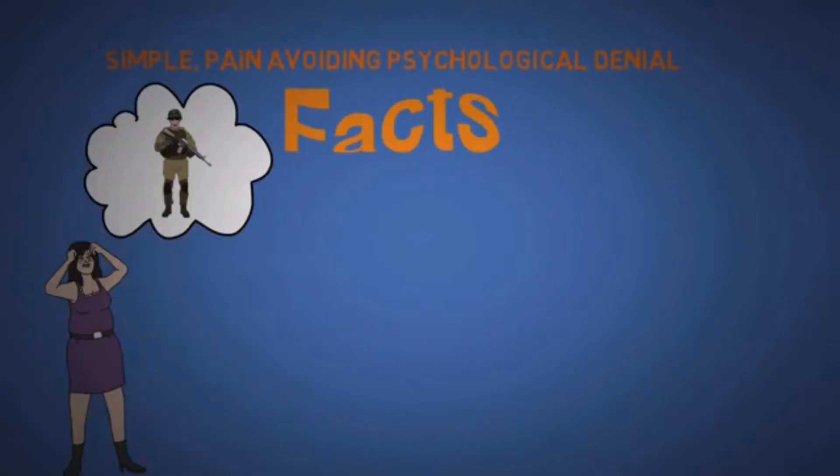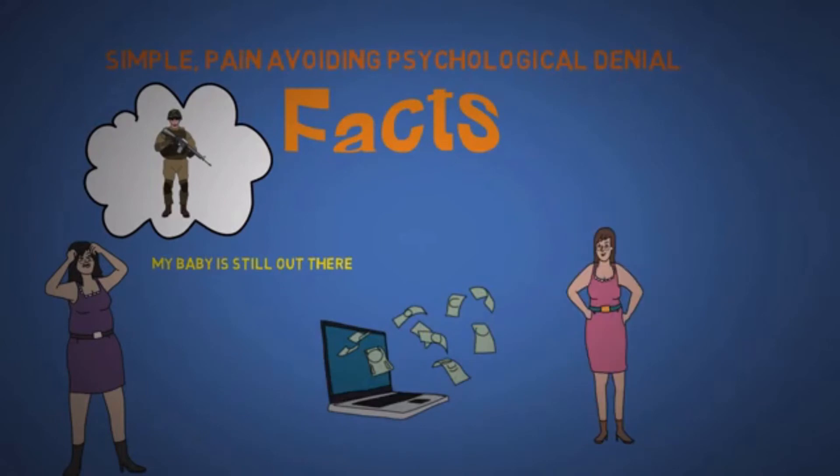The eleventh is simple pain-avoiding psychological denial. We have a habit of distorting the facts. There's stories of mothers who receive news that their son from the army died and refused to believe it. We can trick ourselves to numb the pain. Get-rich-quick or lose-weight-quickly scams work effectively on people who are in denial.